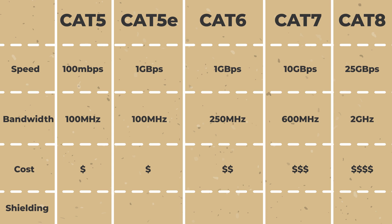CAT 6 through 8 have shielding. CAT 5 and CAT 5e can be both shielded and unshielded.